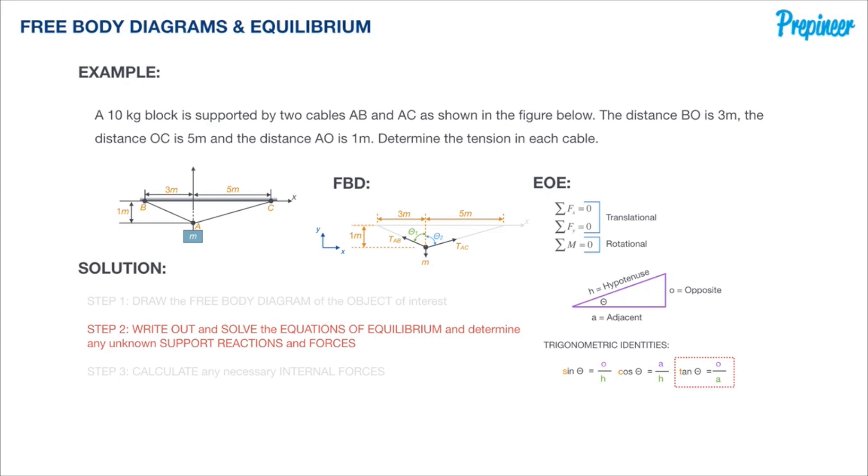In an effort to conserve time, I'm going to skip walking through the calculations as we have already had a full cram session on trig identities. When we put in all of our information, we get theta 1 equal to 71.6 degrees and theta 2 equal to 78.6 degrees.